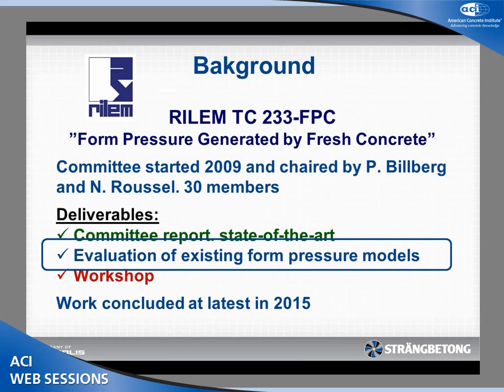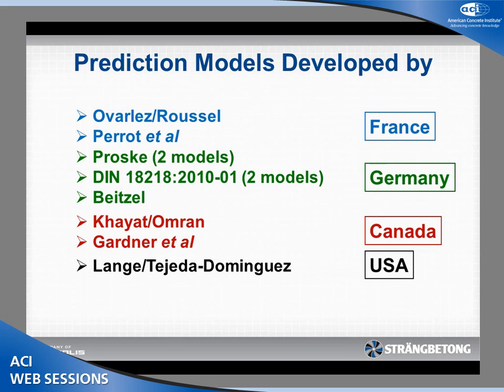Now we're going to talk about the second deliverable: evaluation of existing form pressure models. The people behind these models include: Ovarles and Roussel from France; Perrault et al., also from France; Thilo Proske from Germany, who had two different models within the DIN norm; Mark Beitzel; from Canada, the model by Khayat and Omran; John Gardner with colleagues; and from the USA, a model developed by David Lang and his master's student, Tejeda Dominguez.